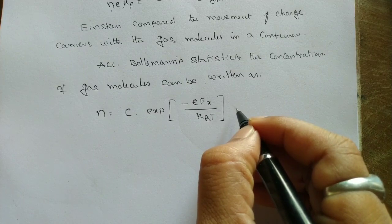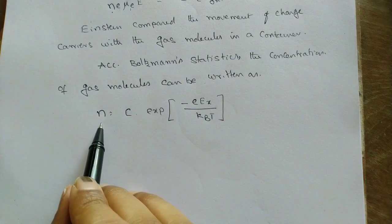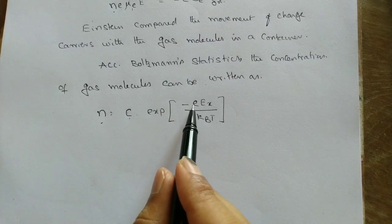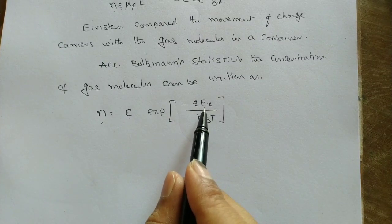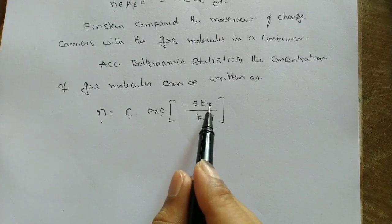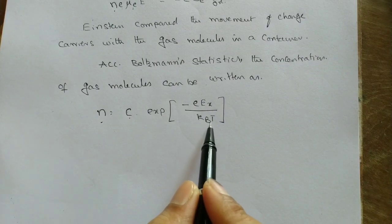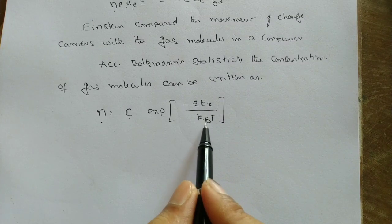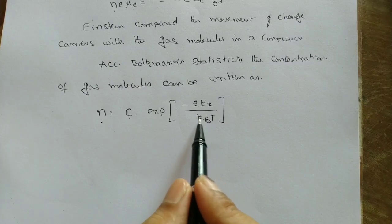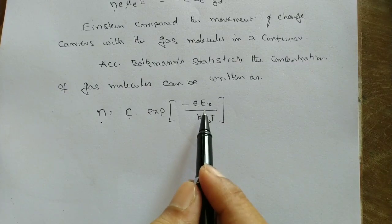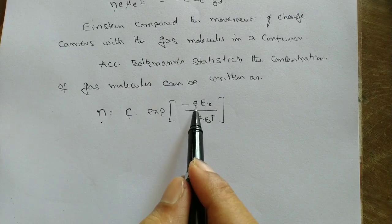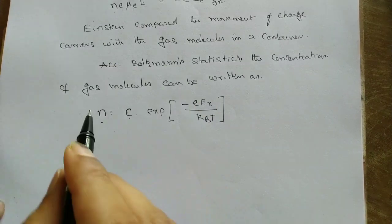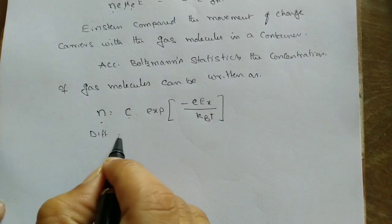The concentration formula is: n = C · exp(−e·E·x / k_B·T). Here, n is the concentration of gas molecules, C is a constant, e is the charge, x is the position along a certain direction, k_B is the Boltzmann constant, and T is the absolute temperature. The product k_B·T represents an energy. Now differentiate this equation with respect to x.